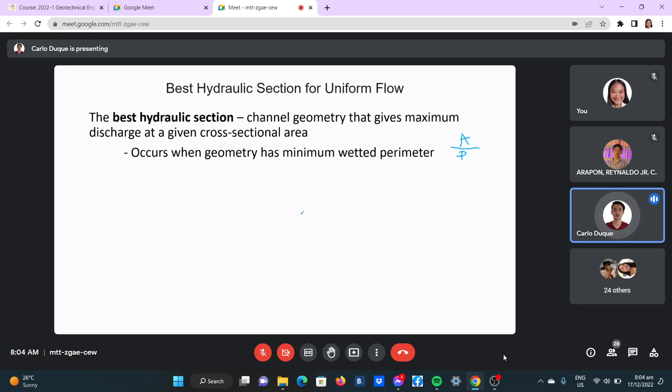Okay, so when designing best hydraulic section, the goal is to have maximum discharge. And then to have maximum discharge, you need the least wetted perimeter in the design. So these are the concepts in design.